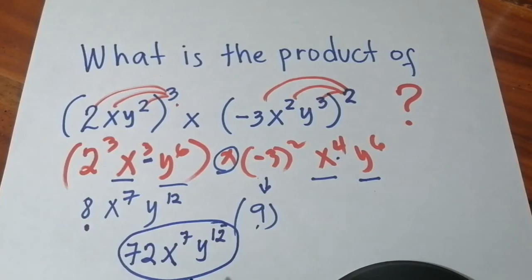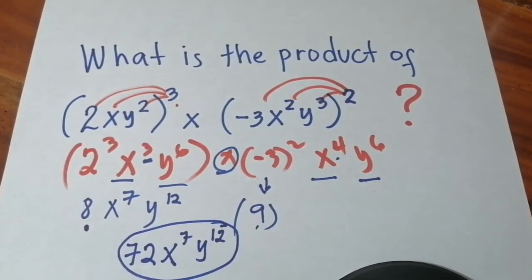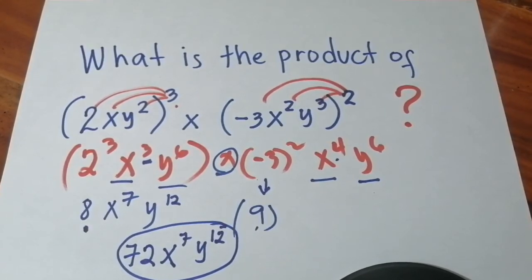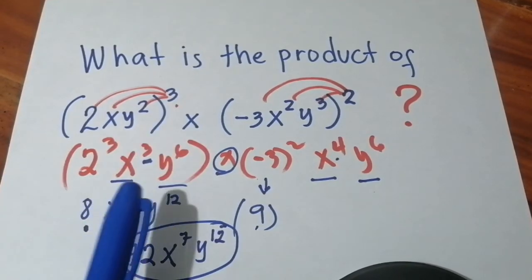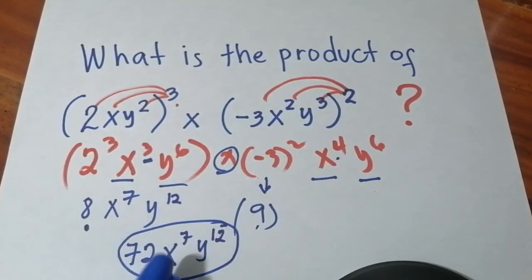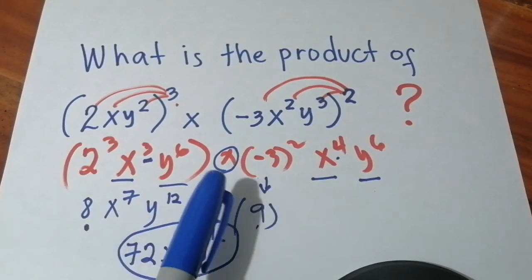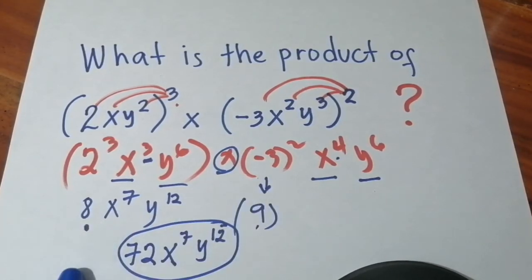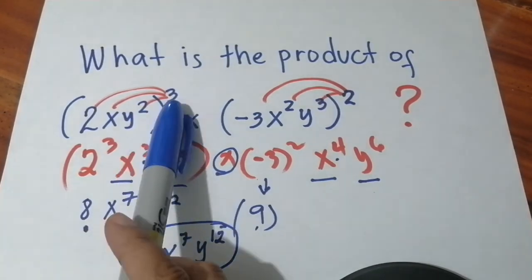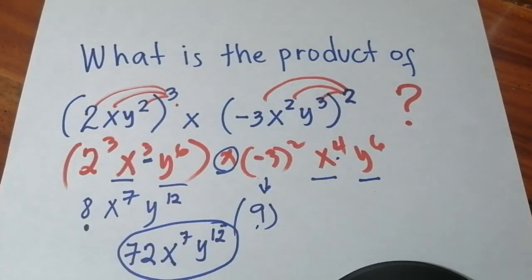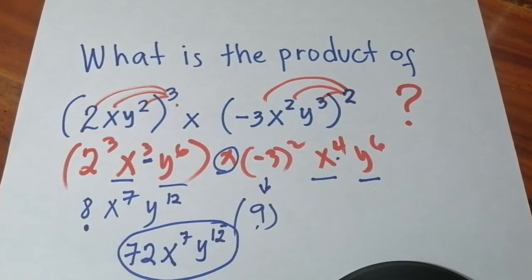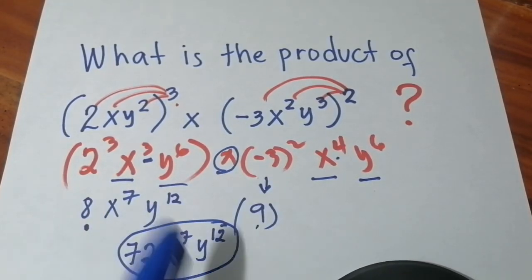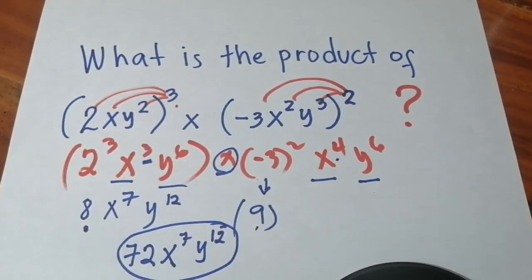You can easily get this if you master the rule in exponents. What are the rules in exponents that we used here? It's double exponent, and the rule when we are multiplying exponents. When do we multiply exponent? That's only when it's double exponent. If the operation is multiplication, what do we do with the same variable? We only add them.